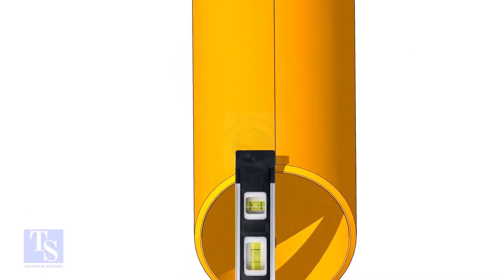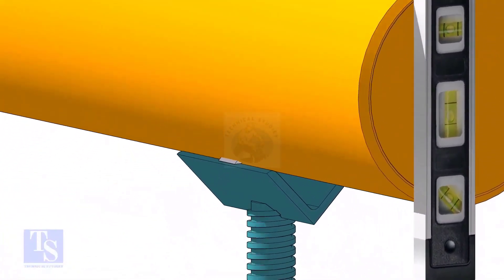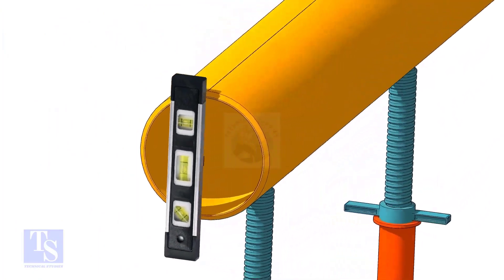Level the pipe horizontally and vertically as shown. After leveling, arrest the pipe to stop it from rotating.